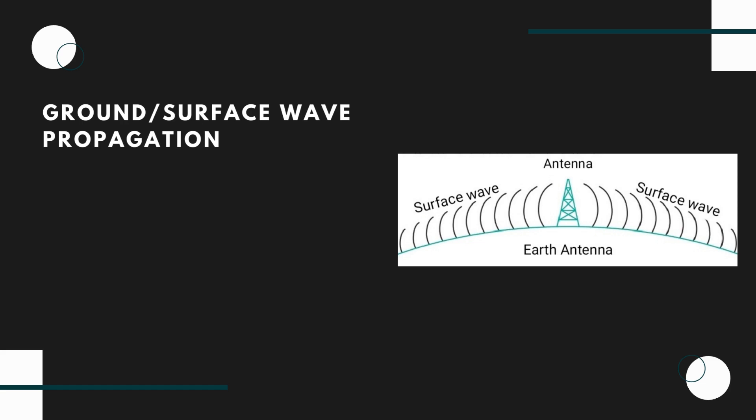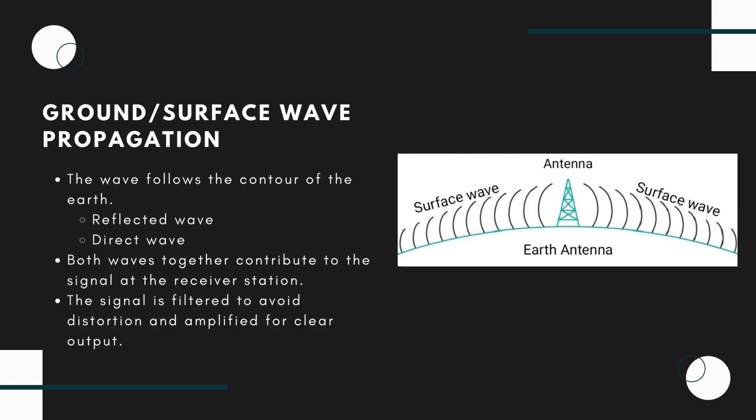Ground wave propagation of the wave follows the contour of the earth. The wave sometimes bends due to the earth's magnetic field and gets reflected to the receiver. Such a wave can be termed as reflected wave. The wave that propagates through the earth's atmosphere is known as a direct wave. The direct wave and reflected wave together contribute to the signal at the receiver station. When the wave finally reaches the receiver, the lags are cancelled out. In addition, the signal is filtered to avoid distortion and amplified for clear output.